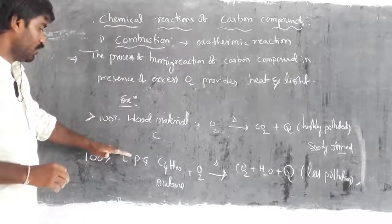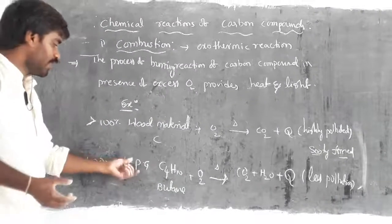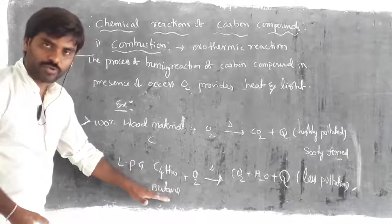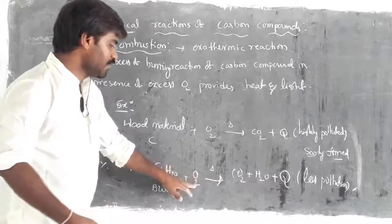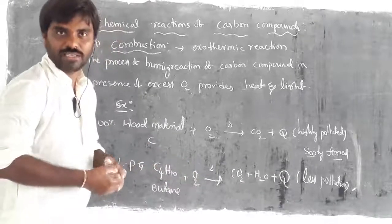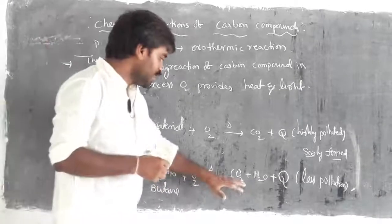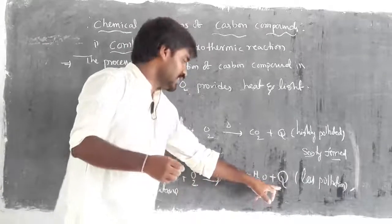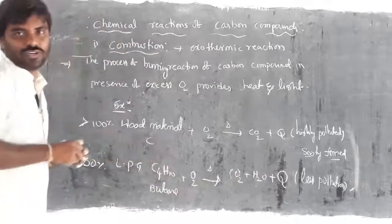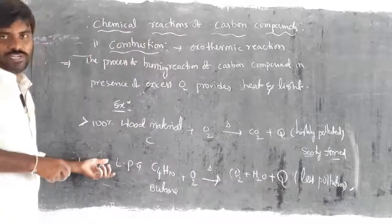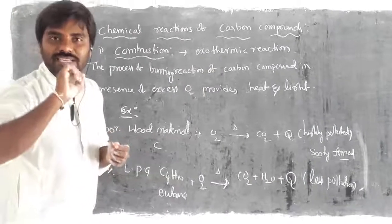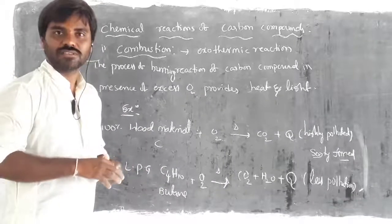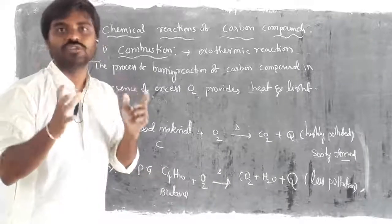Now, let us come to LPG — liquefied petroleum gas — which consists of butane gas in maximum percentage. In presence of oxygen, the burning reaction takes place at the gas burners, releasing carbon dioxide, H2O, and a high amount of heat. This process produces less pollutants because it never releases any sooty particles. There is no smoke from LPG gas burners and cylinders because 100% combustion is possible.